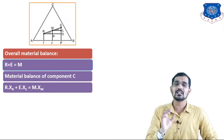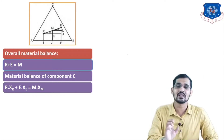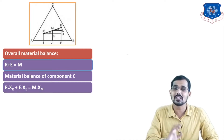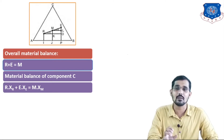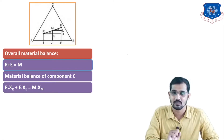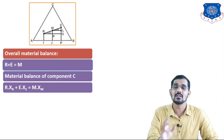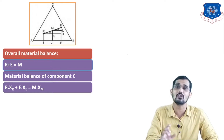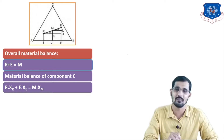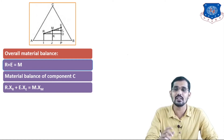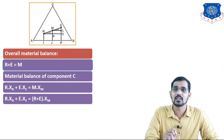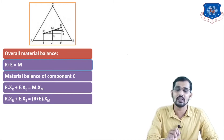Here, R is the mass of the raffinate phase and XR is the weight fraction of the solute in the raffinate phase; E is the mass of the extract phase and XE is the weight fraction of the solute in the extract phase. M·XM: M is the total mass R plus E, and XM is the weight fraction of the solute in the mixture. Next, replace M by R plus E from equation number 1, giving: R·XR + E·XE = (R + E)·XM.